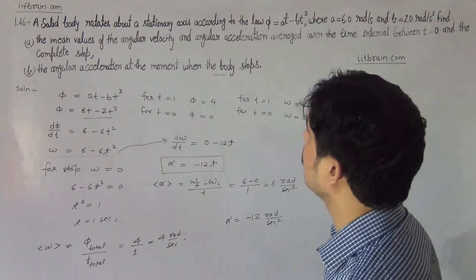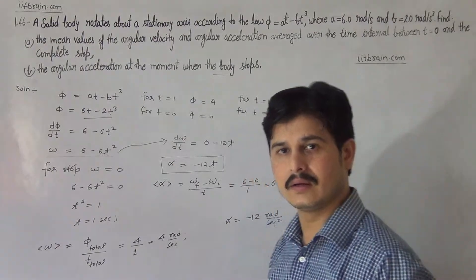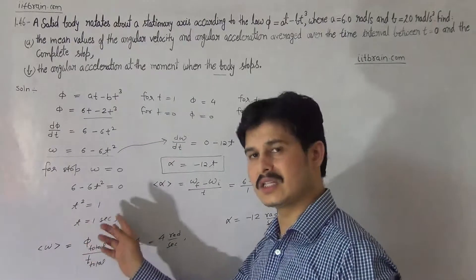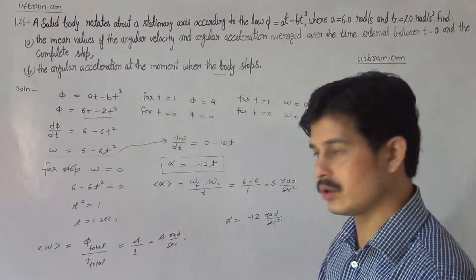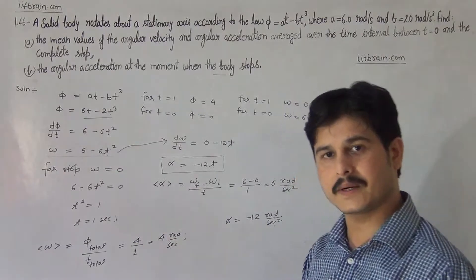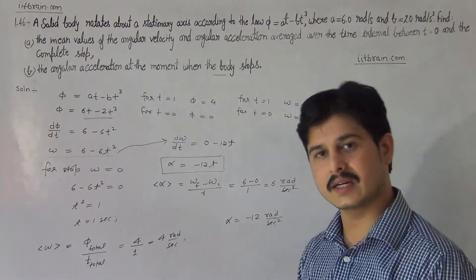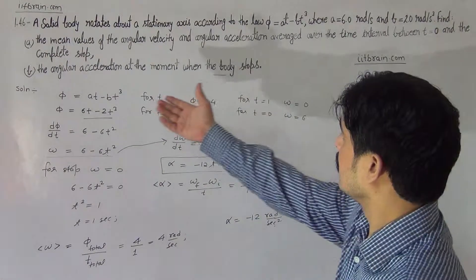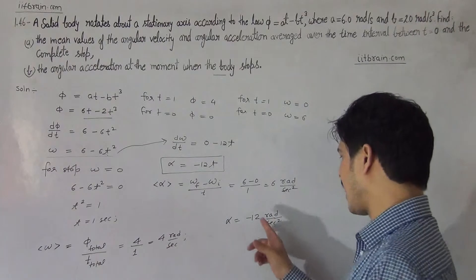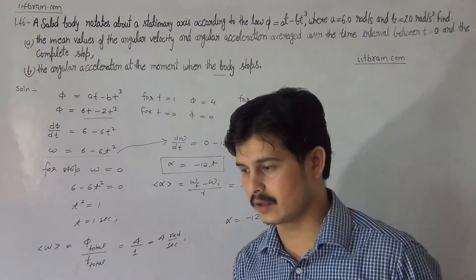So there are three parts to this problem. First, the total time up to the stop is 1 second. The mean angular velocity in that interval is 4 radian per second, and the mean angular acceleration is -6 radian per second squared. Besides that, the instantaneous angular acceleration when the body stops is -12 radian per second squared. Thank you.